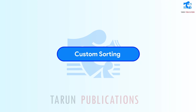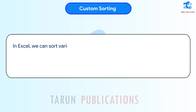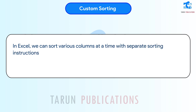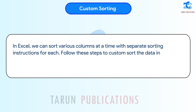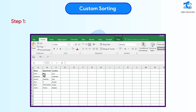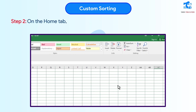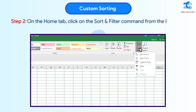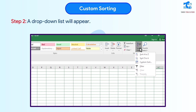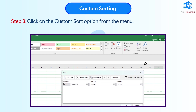Custom Sorting. In Excel, we can sort various columns at a time with separate sorting instructions for each. Follow these steps to custom sort the data in Excel. Step 1: Select the range of columns to be sorted. Step 2: On the Home tab, click on the Sort and Filter command from the Editing group. A drop-down list will appear. Step 3: Click on the Custom Sort option from the menu.